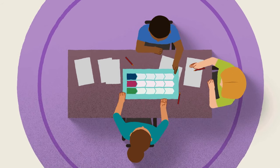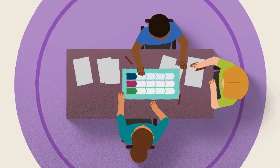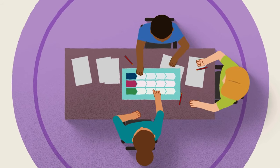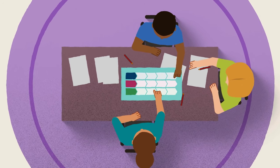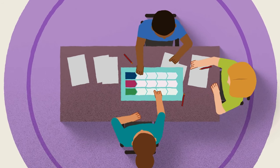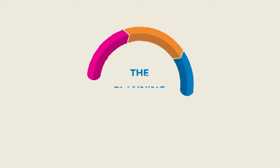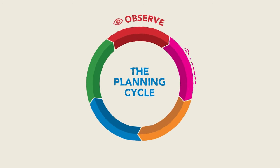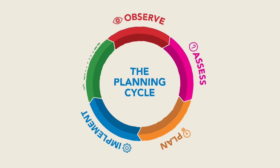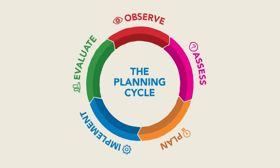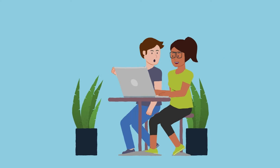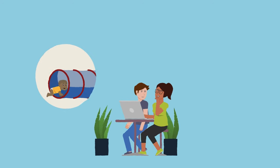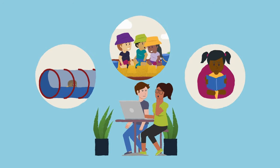The early childhood learning trajectories align with the principles, practices and learning outcomes of the Early Years Learning Framework Version 2, and they support the aims of the National Quality Standard. Educators and teachers can use the learning trajectories alongside the Early Years Learning Framework Version 2 planning cycle. The planning cycle describes the process of planning, documenting, responding to and supporting children's learning, development and wellbeing.